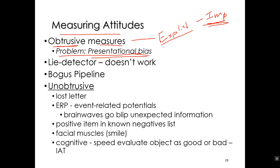Often these obtrusive measures, which give us explicit measures of attitudes, will be very contaminated, mainly by a person's self-esteem or their expectations about what the researcher wants. So we're not really getting, in many cases, the person's true attitude. So how are we going to go about getting a true attitude?